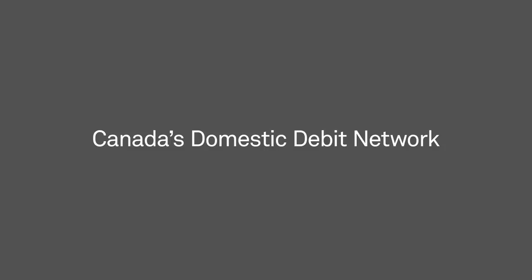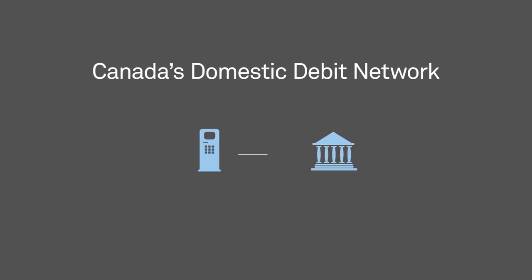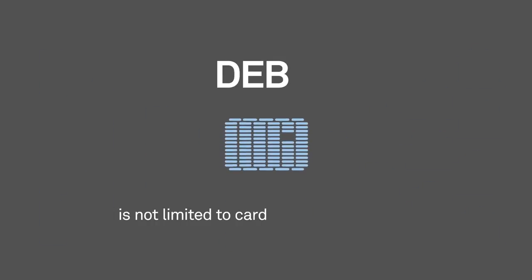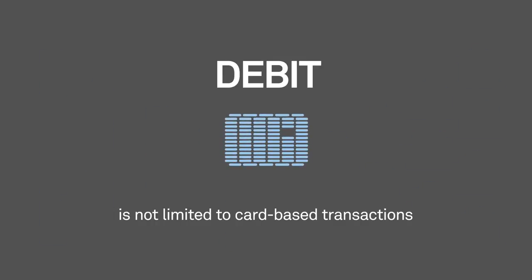Canada's domestic debit network has evolved from a small network of automated bank machines, or ABMs, run by a few select financial institutions, to a convenient and thriving national payment network supported by the operations of the Canadian Payments Association, the CPA. But Canada's debit marketplace isn't limited to card-based transactions.